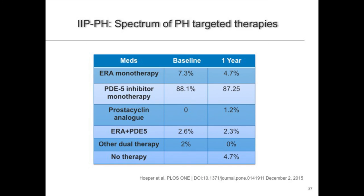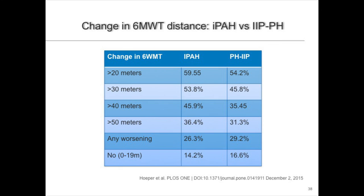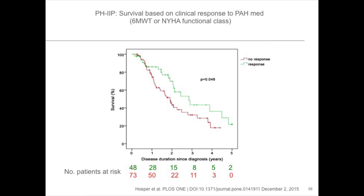The COMPERA registry, a registry of patients with PH in therapy out of Europe, has produced interesting data. A publication in December of last year looked specifically at the ILD population from COMPERA — showing what happens in the trenches. In Europe, many of these patients are treated. Many had more severe pulmonary hypertension, most with mean PH pressures greater than 35 mmHg. The results achieved in treated patients are almost comparable to what was achieved in the IPAH population. Those who improved more than 20, 30, or 40 meters in walk distance — actually quite similar, which is remarkably surprising. Also from the same study, those patients who had a treatment response — defined as a change in walk distance of around 20 meters or improvement in functional class — showed a survival benefit as well.